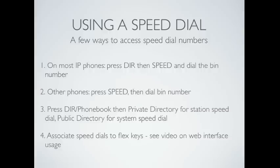On other phones, there'll be a Speed button — you can press that and then just dial the bin number. You can also pull up the directory or the phone book and pick the private directory for your station speed dial, or the public directory for system-wide speed dial.